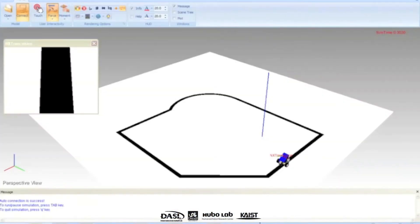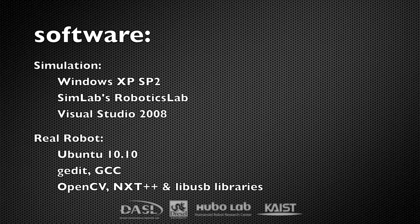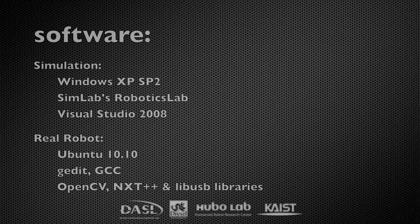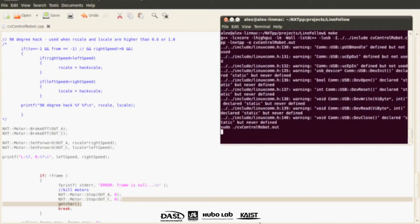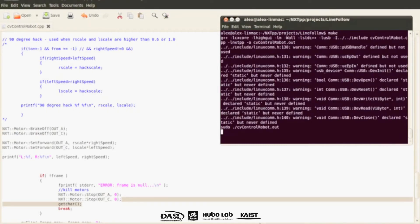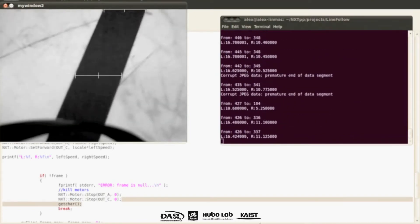The line following simulation was programmed in C++ using Robotics Lab libraries and Visual Studio. The real robot was also programmed in C++ using OpenCV to gather camera data. NXT++ and LibUSB libraries were used to communicate with the NXT. The code was written and compiled in Ubuntu 10.10 using gedit and gcc.